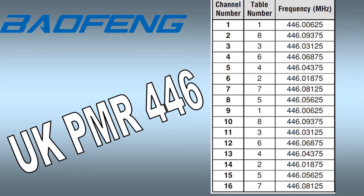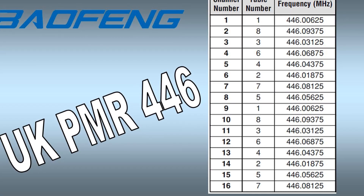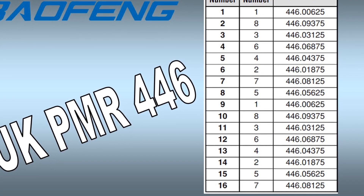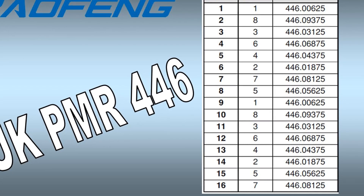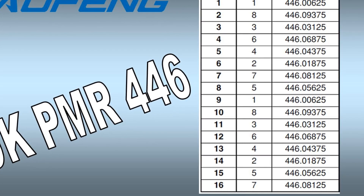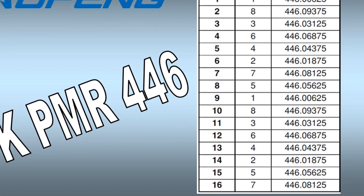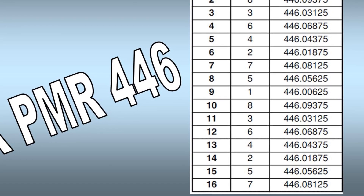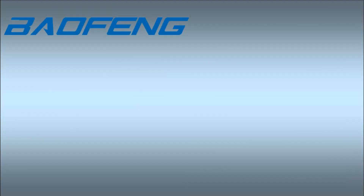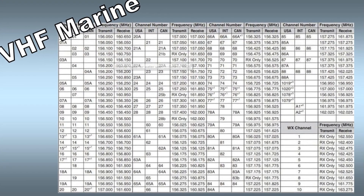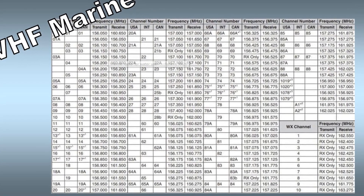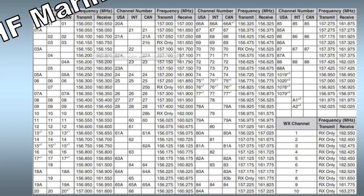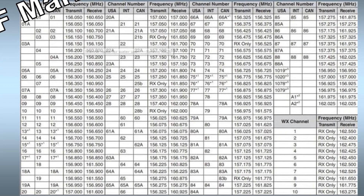So channel 1 on this radio I could program for PMR446 channel 1, and I might want to name that channel as PMR446-1 as well. Because we could also, for example, program VHF Marine radio frequencies into these to listen on — I could have VHF Marine channel 1 stored as, say, channel 20 in memory. It can be a little confusing, but the radios are quite versatile. You can name as well as number the channels, which is definitely a useful feature.